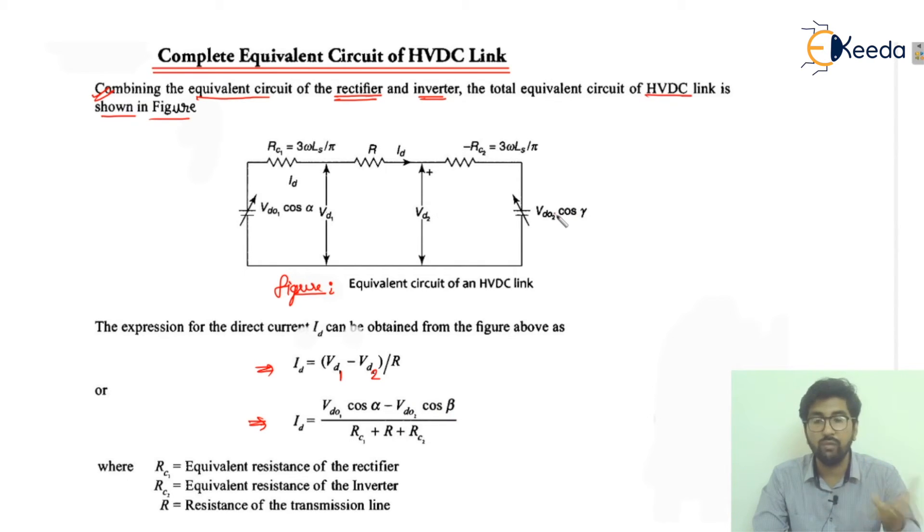This is RC1, R, and RC2 written here. RC1 is the equivalent resistance of the rectifier. RC2 is the equivalent resistance of the inverter. R is the resistance of the transmission line. All three are represented here. This is the basic equivalent circuit of the HVDC.